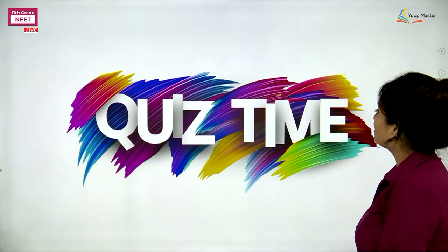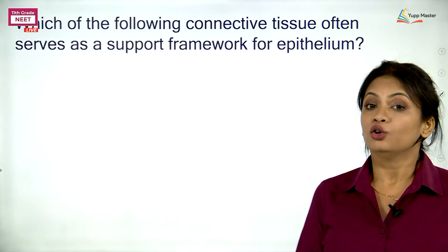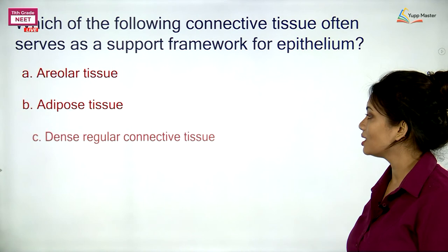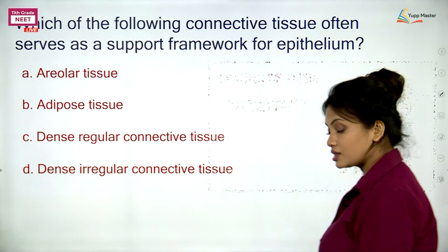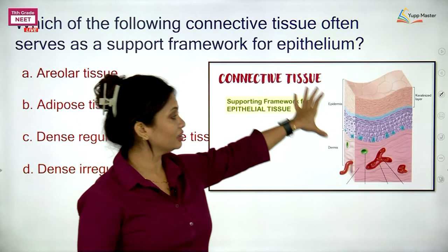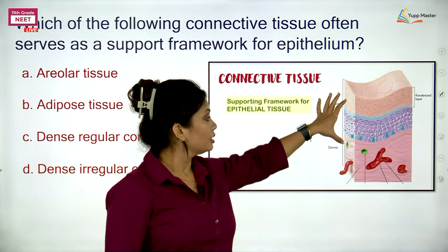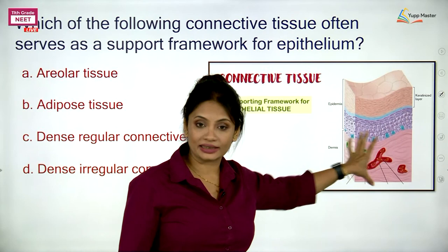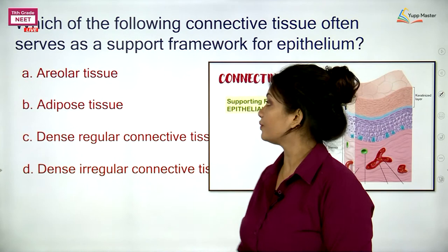Now let's see some MCQs. Which connective tissue often serves as a support framework for epithelium? Options are areolar, adipose, dense regular, or dense irregular connective tissue. Connective tissue is always there to support the epithelium above it — for example, the dermis supports the epidermis. The correct answer is areolar tissue.